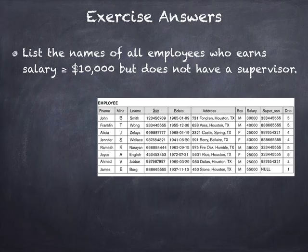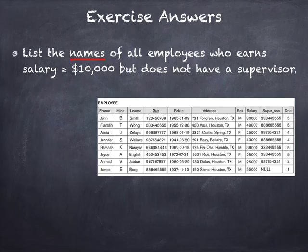Super_SSN is the supervisor's SSN — it holds the reference to the employee's supervisor. We want to list the names of employees who meet two conditions: salary greater than or equal to $10,000, and no supervisor.